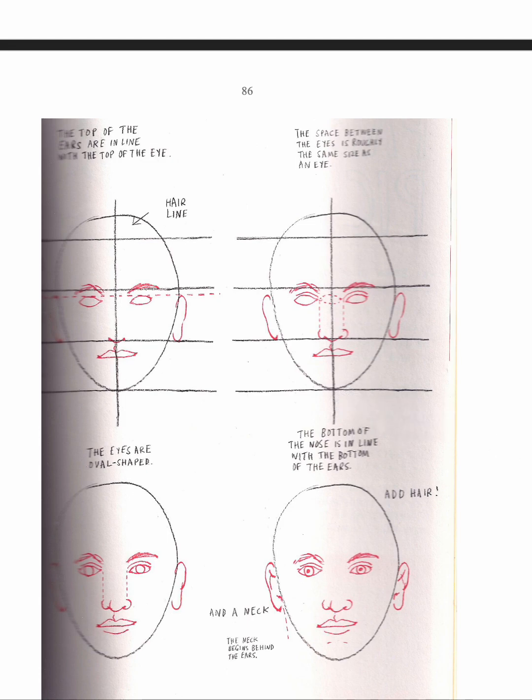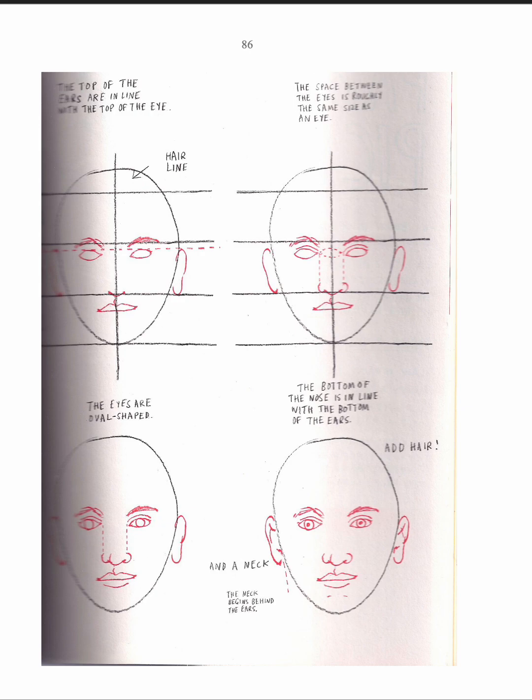And then you can see the lips come across here, right in there. So you can see these proportions now. Then you come down. Oh, and it did mention the eyes are oval shaped. And the bottom of the nose is in line with the bottom of the ears. So right there's the bottom of the ears and there's the bottom of the nose. So that's the proportions.